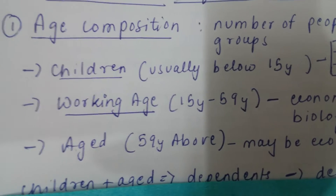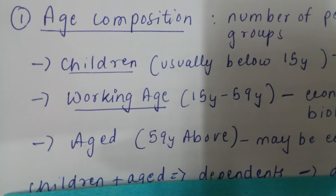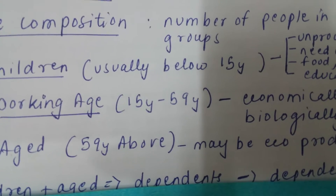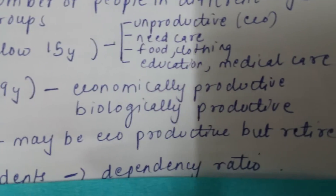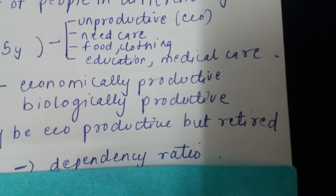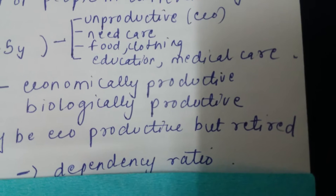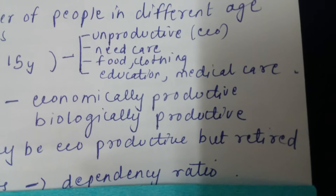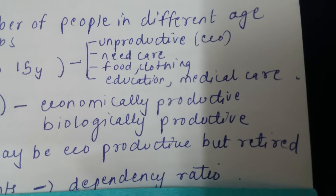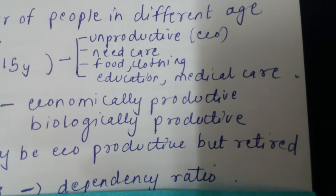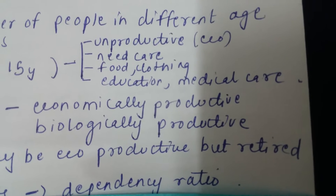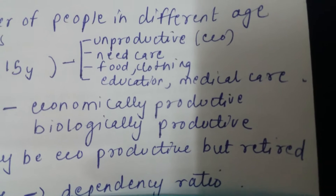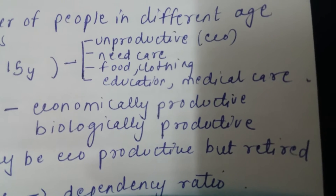The second and most important population group is the working age, which is from 15 to 59 years. Please remember the range 15 to 59. This population is economically productive and biologically productive. Economically productive because they can earn and support not only their parents but others as well. Biologically productive because they can get married, have kids, and start a family.